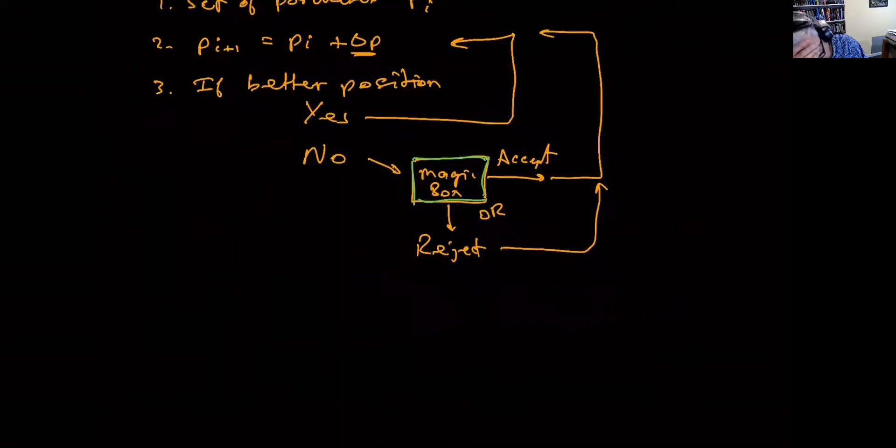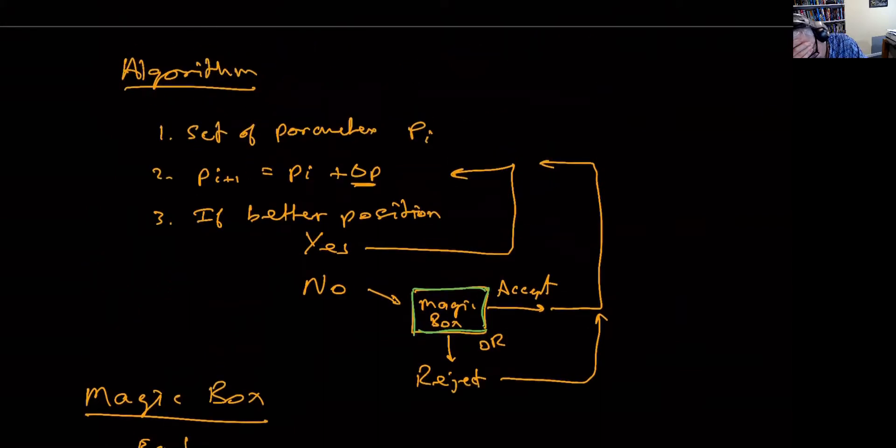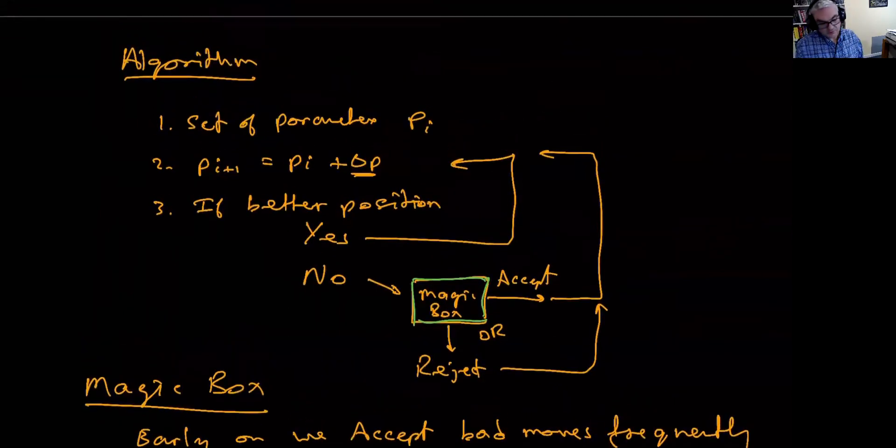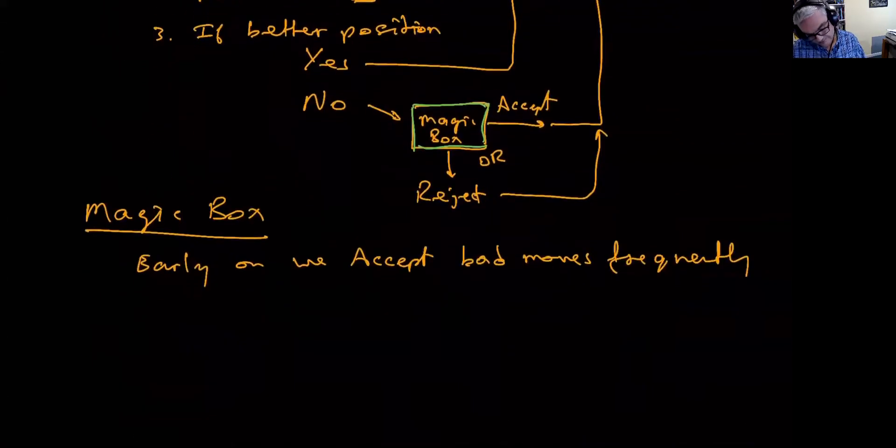The question is what's happening in the magic box. That's basically the secret of simulated annealing. Well, I can express the magic box in actually just two lines. So the magic box, two things. Early on, so remember, this is an iterative process. We go round and round and round. So early on in the iteration, we generally will accept bad moves frequently. So early on, if we ever get a bad move, we'll say yeah, we'll accept it. I want that bad move. Later on, so this is now later on in the iterations, maybe 50 iterations later, we will reject bad moves frequently. That's basically what the magic box will do.